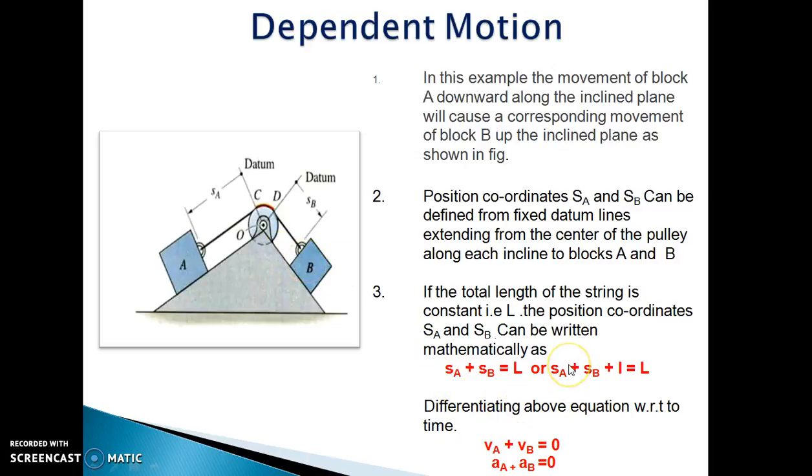Differentiating above equation for the displacement or position with respect to time, we get the velocity equation, that is VA plus VB equal to zero. Further differentiating the equation for velocity, we get the equation for acceleration, that is AA plus AB equal to zero.